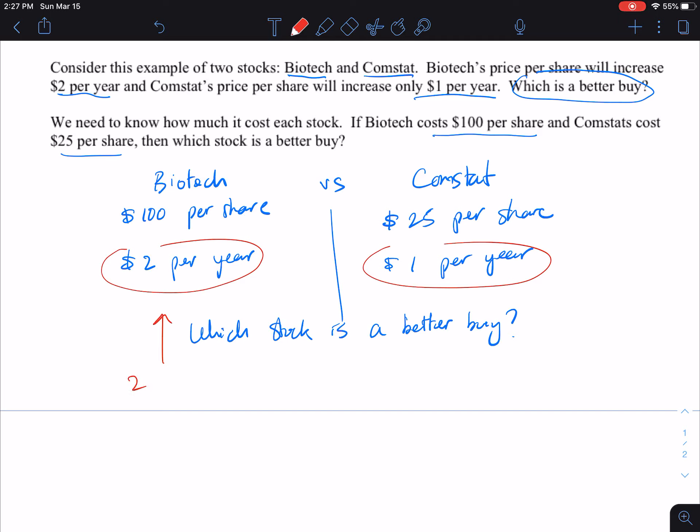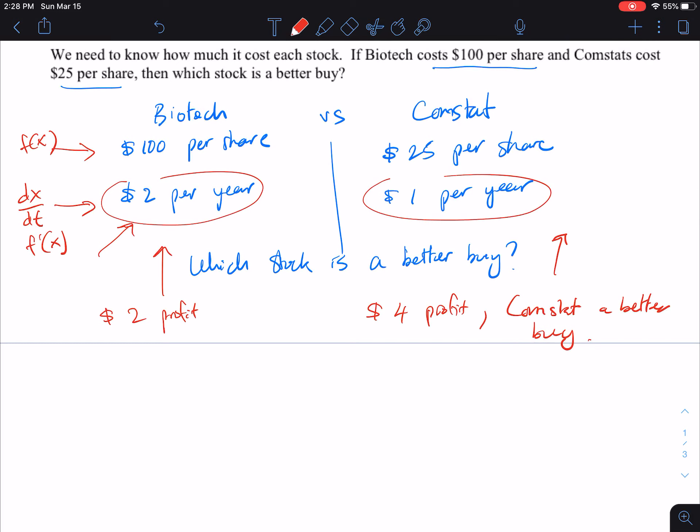If we spend $100 on Comstat, we're looking at a $4 profit here for the first year. So it looks like Comstat is the better buy. I want to bring your attention to this here. These two things - this is the rate we can think of as dx/dt, or f'(x), and here's your f(x). We've already known this - we have the derivative and the function value.